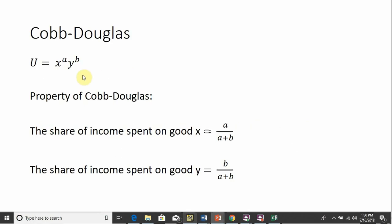All right, so here is a utility function, a Cobb-Douglas utility function written in general form, where units of good x are raised to the power of a, units of good y are raised to the power of b. An important property of Cobb-Douglas utility functions is the following: the share of income spent on good x will be given by a divided by a plus b, where a is what x is raised to, and b is what good y is raised to. The share of income spent on good y will be given by b divided by a plus b.